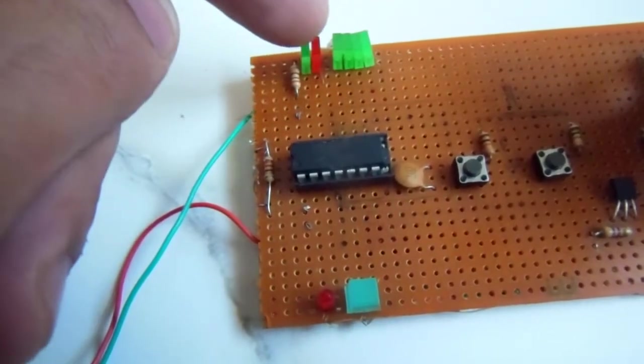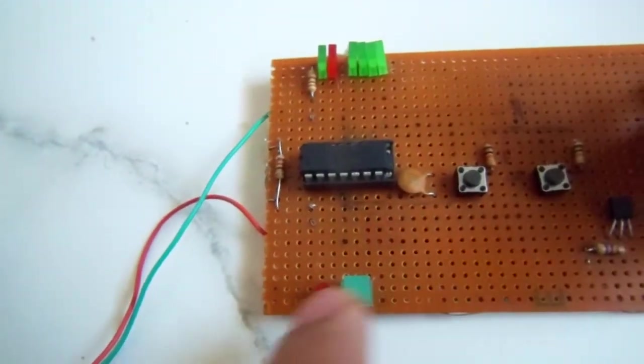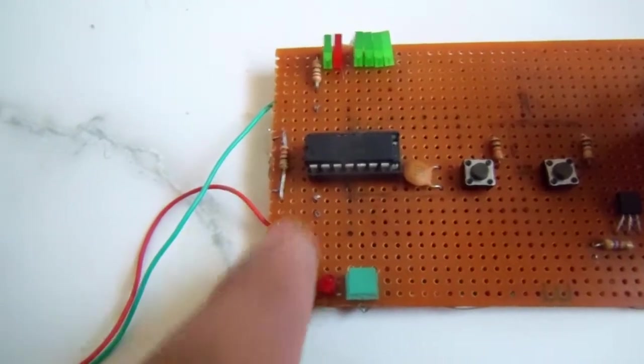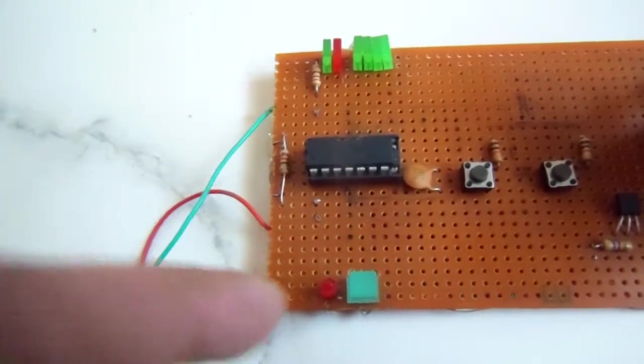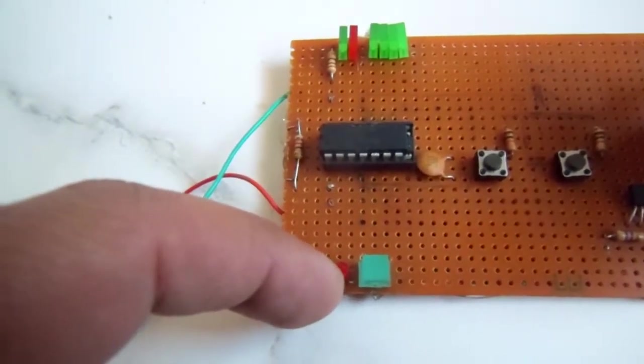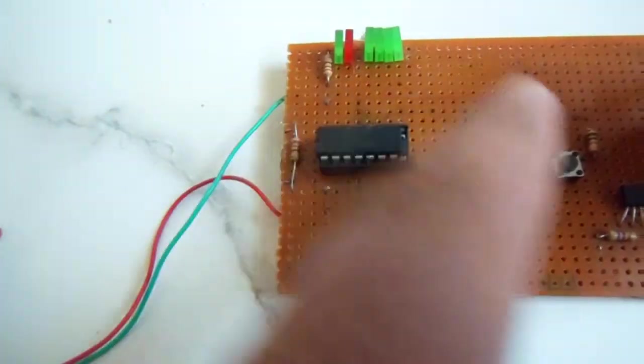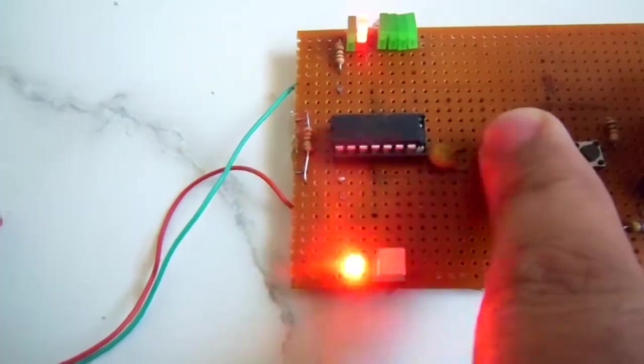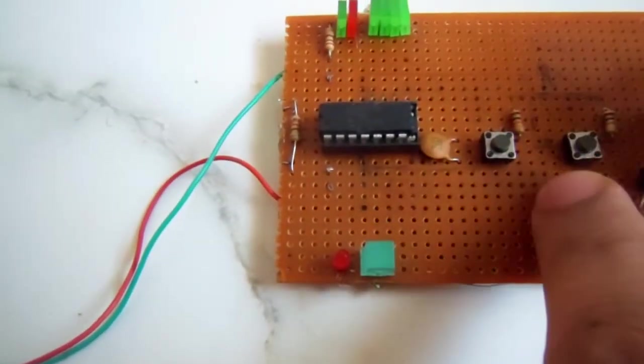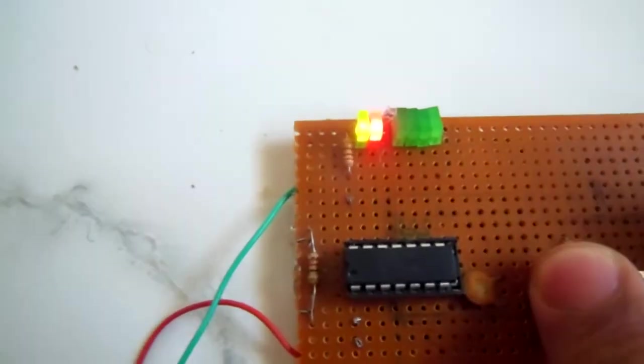In the interrupt service routine, the blinking LED code is written. It will execute the interrupt service routine, after that it will go back to the main function. As you can see, interrupt service routine executes and the green light is blinking. Press it - interrupt service routine executes.